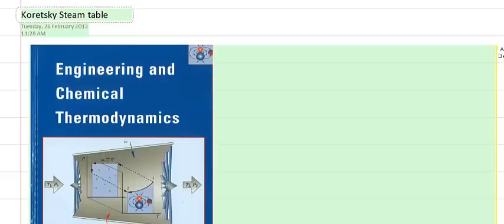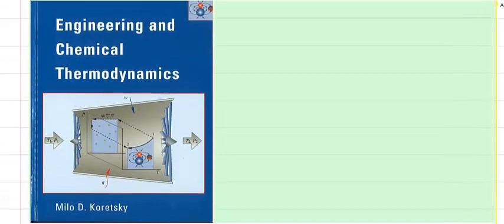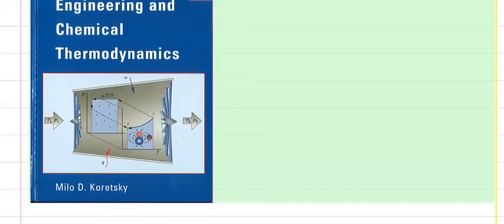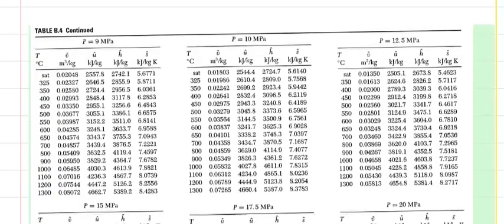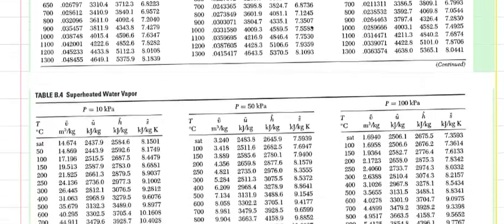These steam tables I've taken from Koretsky, but you can take a steam table from anywhere. First, I'm looking for 10 megapascals. We're at 10 megapascals here and at 500 degrees Celsius, so my enthalpy is 3373.6 kilojoules per kilogram. I'll note that down and find my outlet conditions.